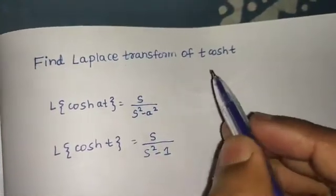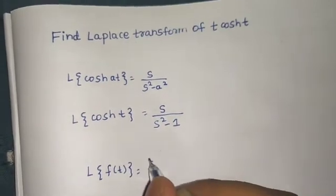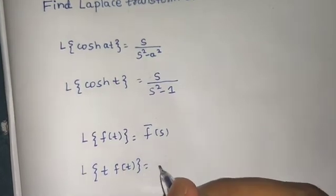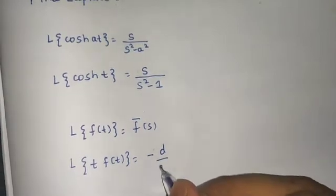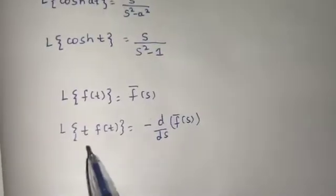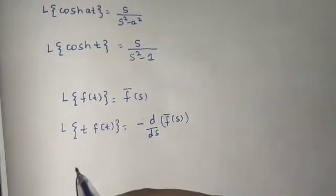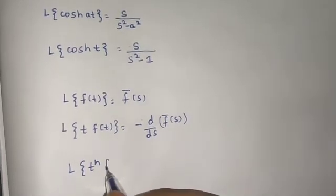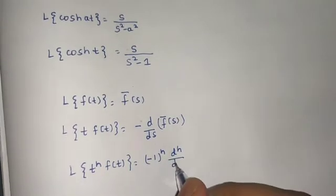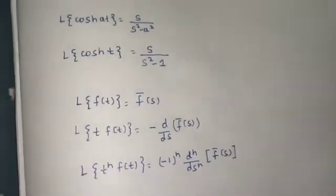Now we also have a property for multiplication by t, which says that if Laplace of f(t) is F(s), then Laplace of t·f(t) is minus of d/ds of F(s) — that is, the first derivative with a negative sign. The general formula is: Laplace of tⁿ·f(t) equals (-1)ⁿ times the nth derivative of the Laplace of f(t).